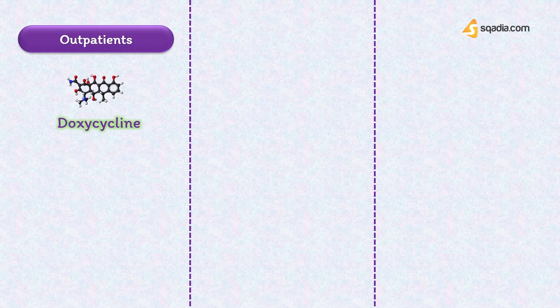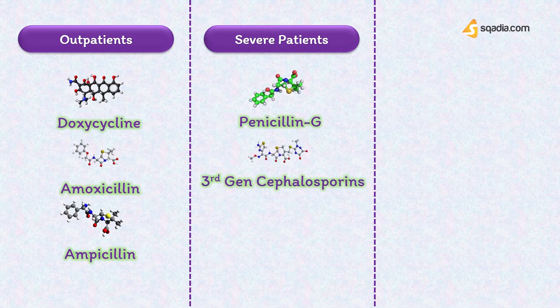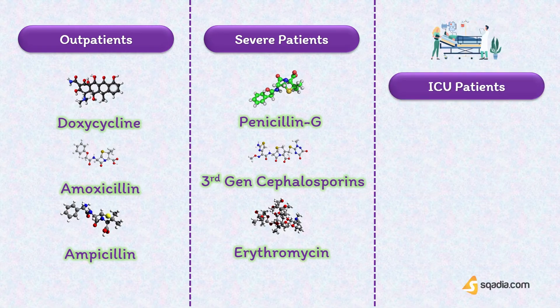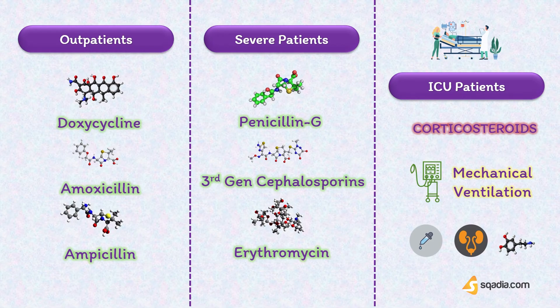If the infection is severe, one may use intravenous penicillin G, third-generation cephalosporins, or erythromycin. Patients with icteric leptospirosis usually need ICU admission as multiple organs can be involved and decompensation can occur rapidly. In the presence of renal failure, corticosteroids may be helpful, though their use is somewhat controversial. Respiratory distress due to lung involvement may require mechanical ventilation. Additional therapies include ophthalmic drops, diuretics, and inotropic agents including renal-dose dopamine if cardiac output is compromised.